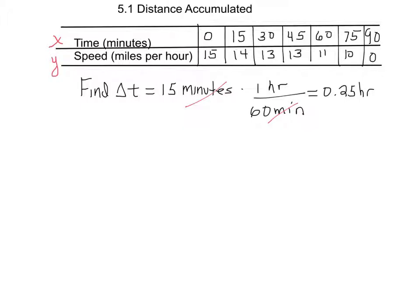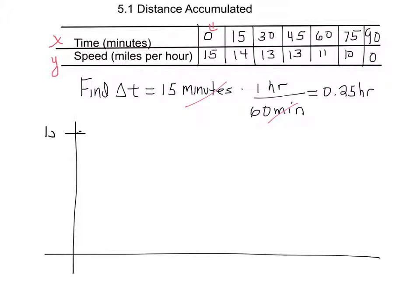Now I want to plot each one of these points — think of time as X and speed as Y. So we have points like (0, 15), (15, 14), and so on. I draw my graph and at time 0 the speed is 15. The change in time between points is 0.25 hours, so instead of 15 minutes for the first interval, that's 0.25 hours.